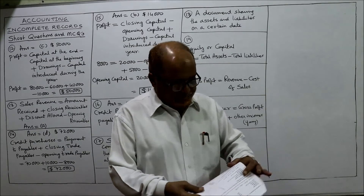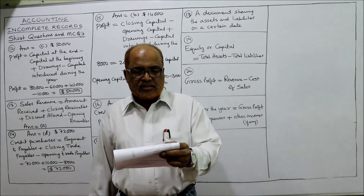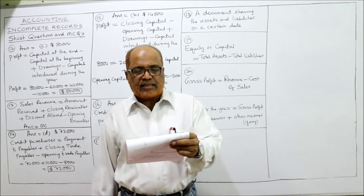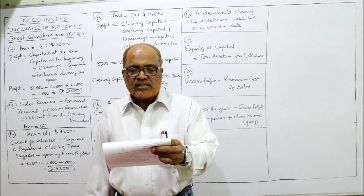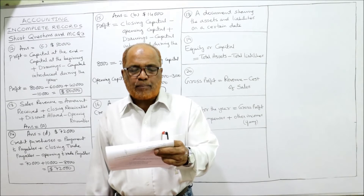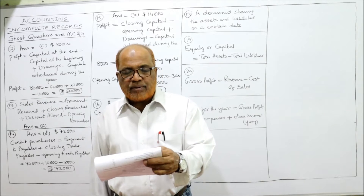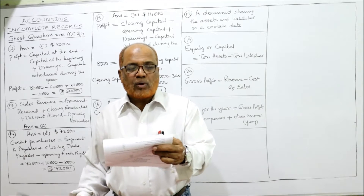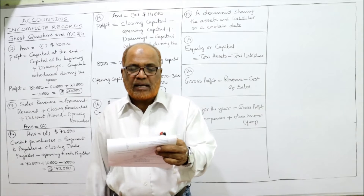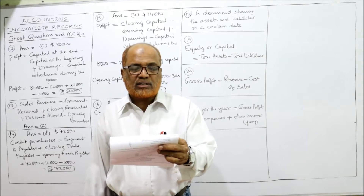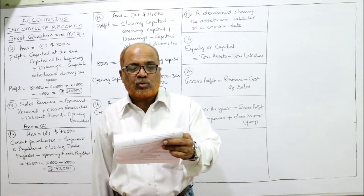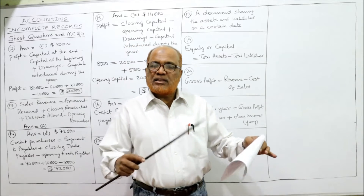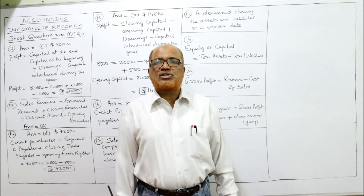See the 12th problem. A business provides the following information: capital on 1st January 2016 is $60,000; drawings during the year $40,000; capital introduced during the year $10,000; capital on 31st December 2016 is $80,000. So we are given the opening capital $60,000, closing capital $80,000, drawings $40,000, and further capital introduced $10,000. We have to calculate the profit for the year.